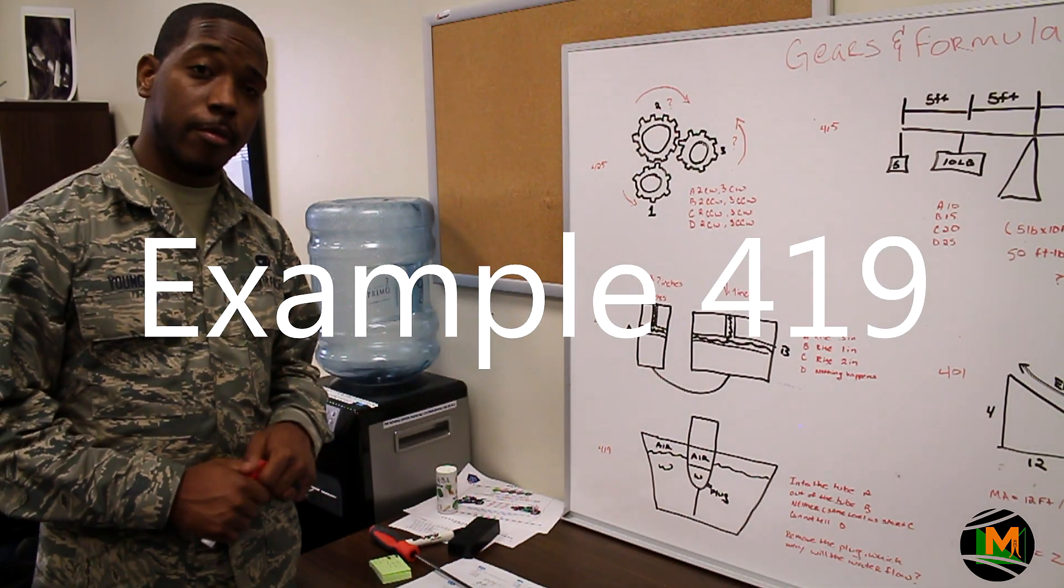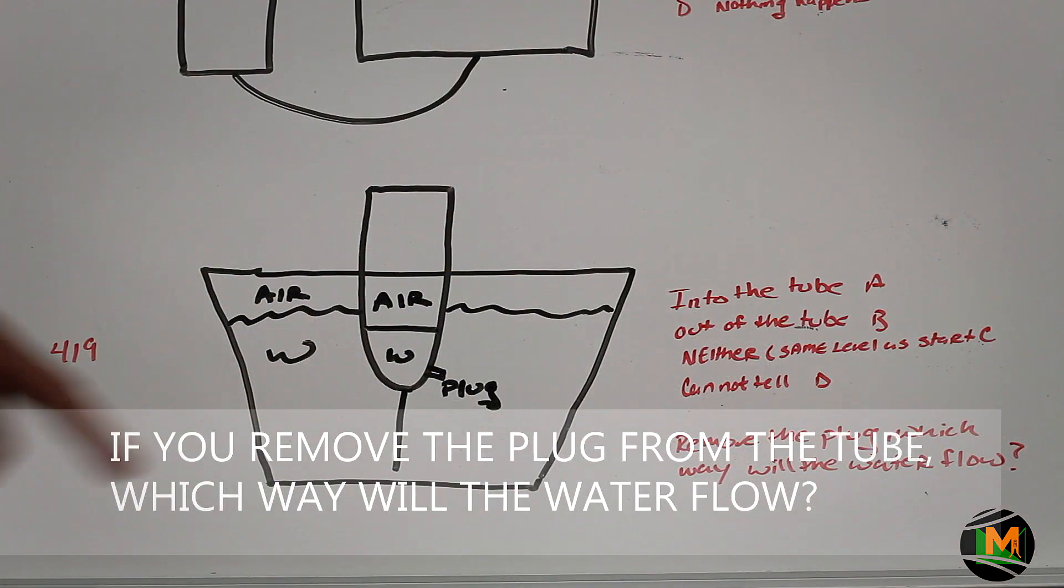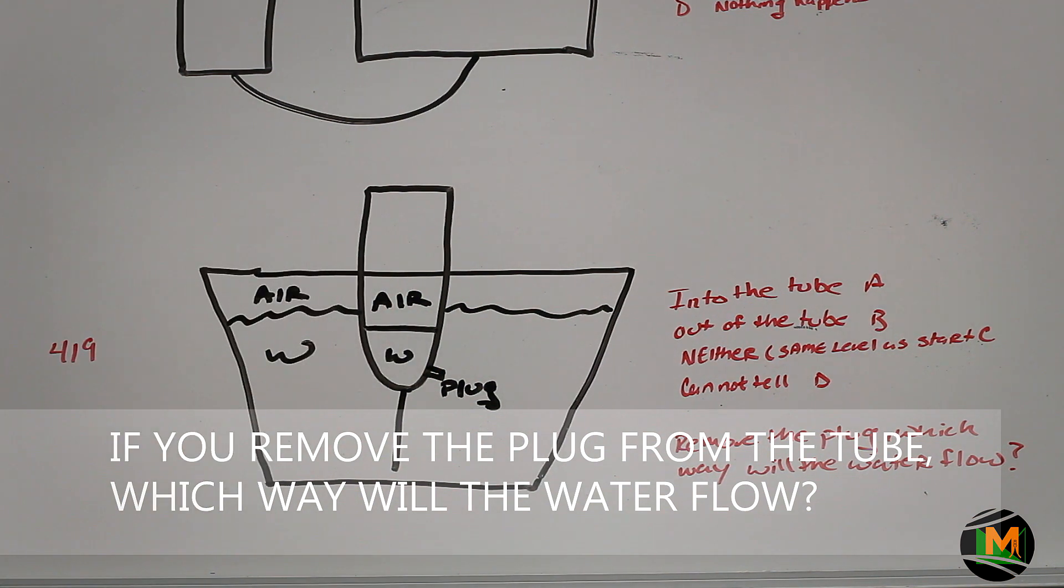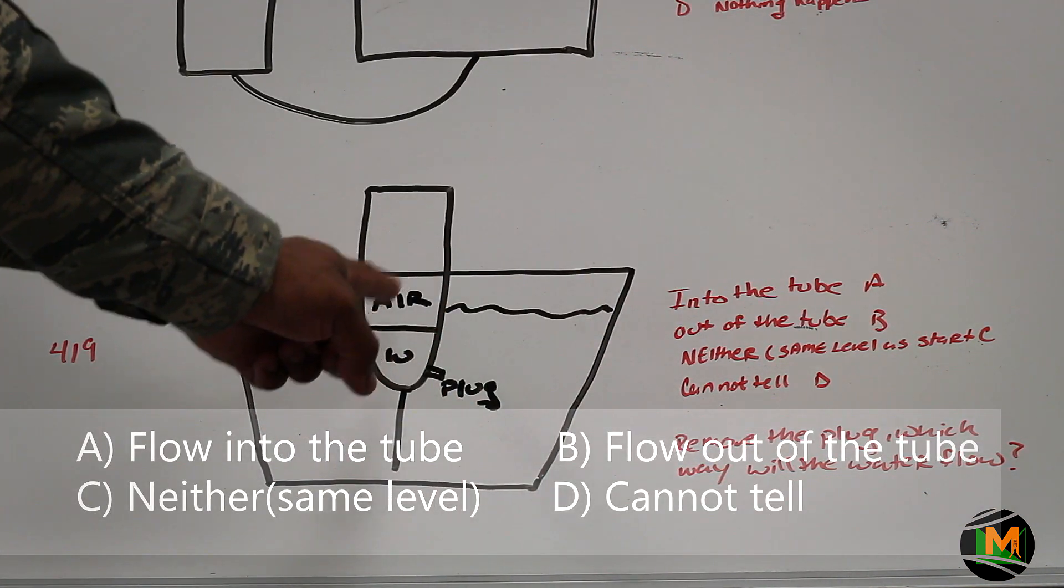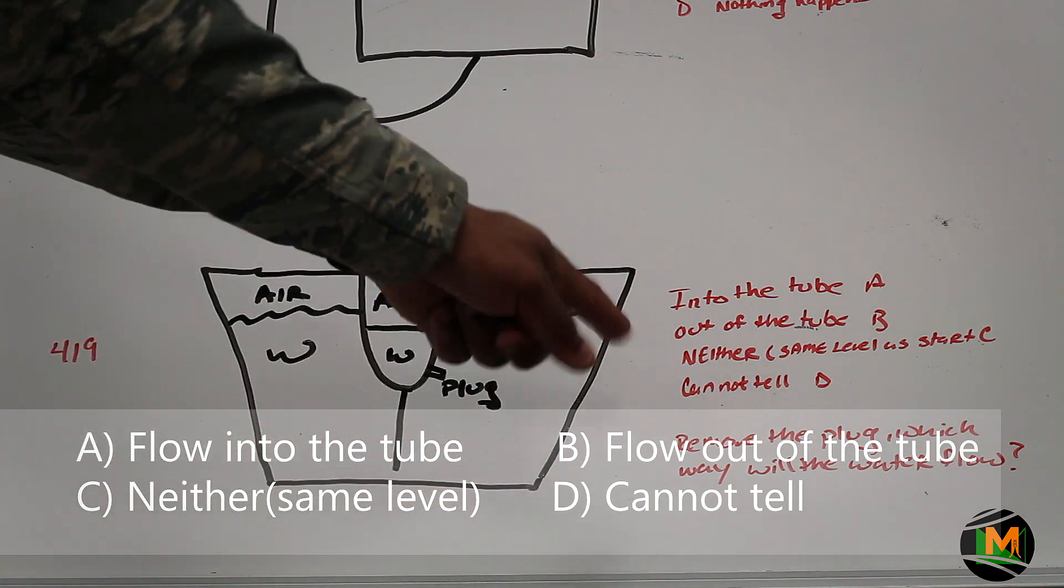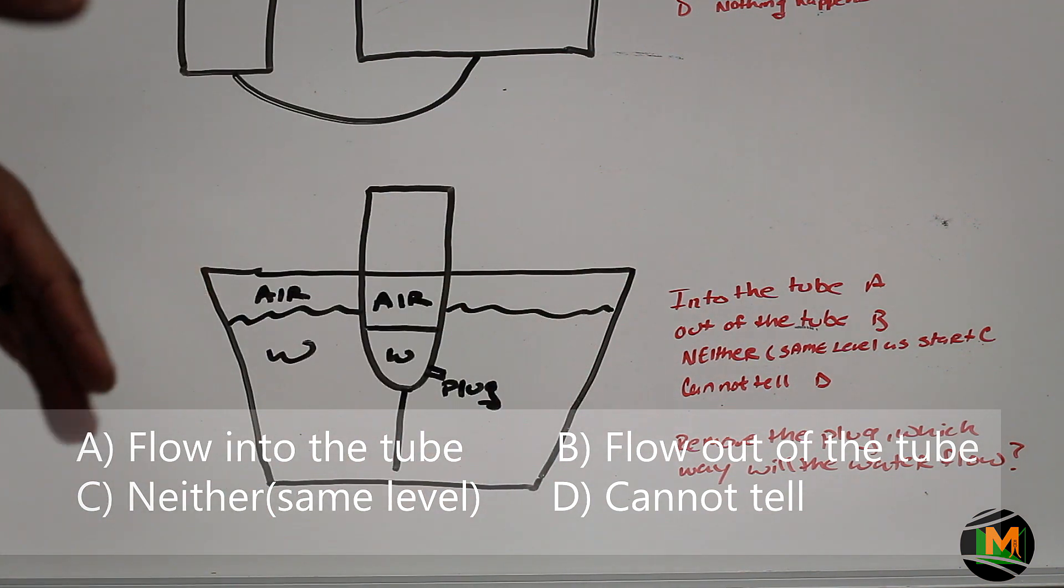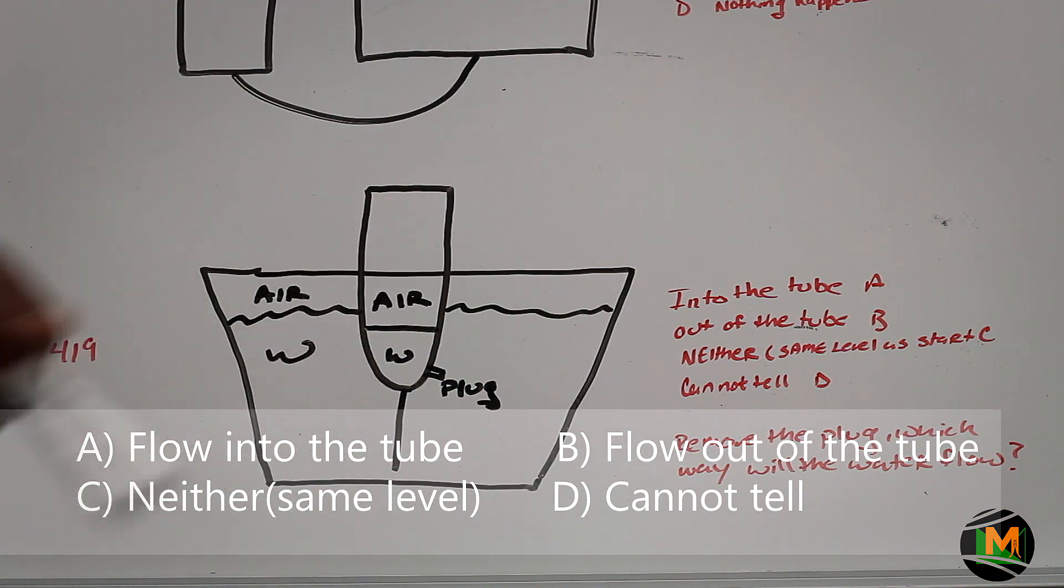The third example is problem number 419. The question states: if you remove the plug from the tube, which way will the water flow? Your choices and your answers are option A, it will flow into the tube. Option B, it will flow out of the tube. Option C, neither, it will stay at the same level. Then option D, can't tell based off the information that you're given.